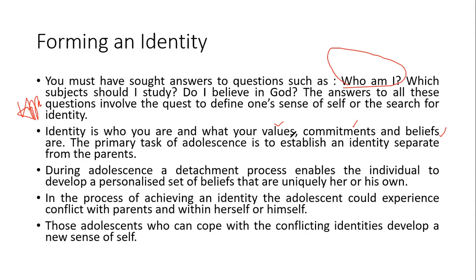The primary task of adolescence is to establish an identity separate from parents. As they come from parents biologically and are dependent on them financially, parents help these individuals grow into a separate individual. The dependence on decisions, biology, and needs will gradually be separated, and the individual becomes independent and identifies himself individually.